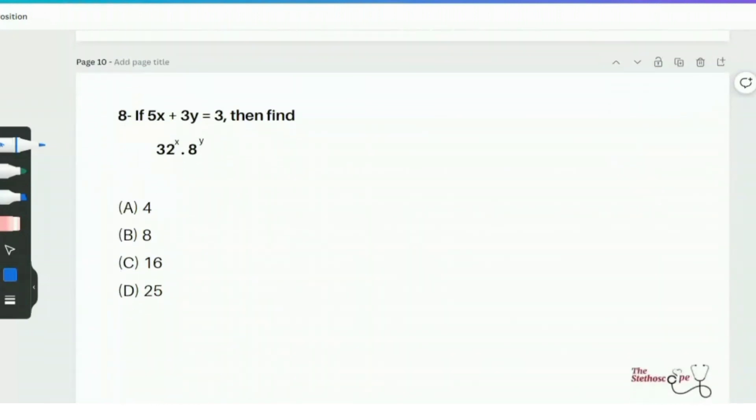So moving towards question number 8 that says if 5x plus 3y equals 3, then find 32 to the power x times 8 to the power y. So the very first thing I'm going to do here is rewrite 32 as 2 to the power 5 and 8 as 2 to the power 3. So this gives me 2 to the power 5 times x times 2 to the power 3 times y. So this is just simply 2 to the power 5x times 2 to the power 3y. Anytime you have 2 exponents with the same base being multiplied together, you can add their exponents. So this is just 2 to the power 5x plus 3y.